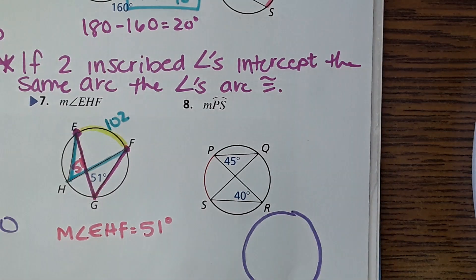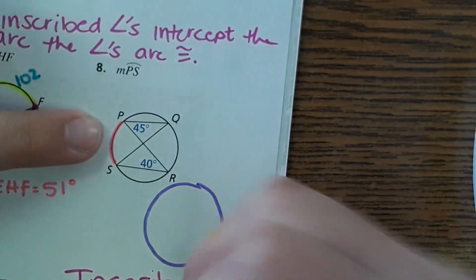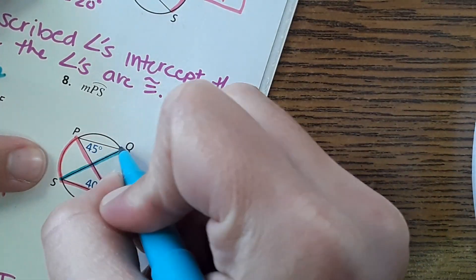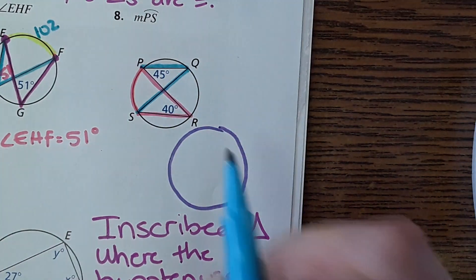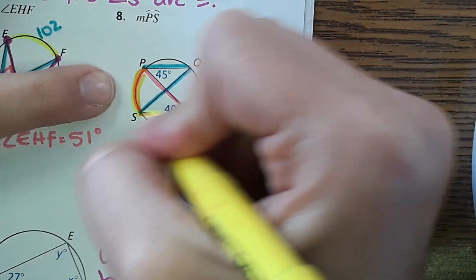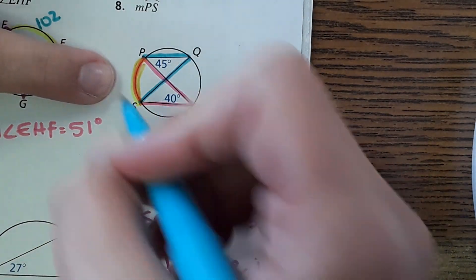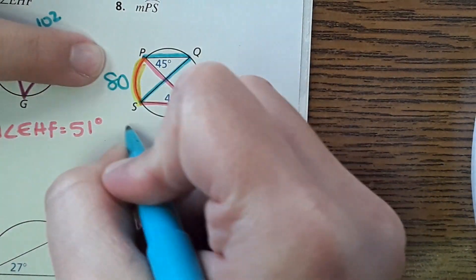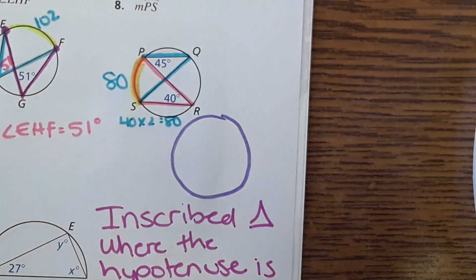The next problem uses the same idea — they want the measure of arc PS. We have two inscribed angles sharing the same intercepted arc. Here the inscribed angle is 40°, so we just multiply 40 by 2 to get the arc. Arc PS equals 80 degrees.